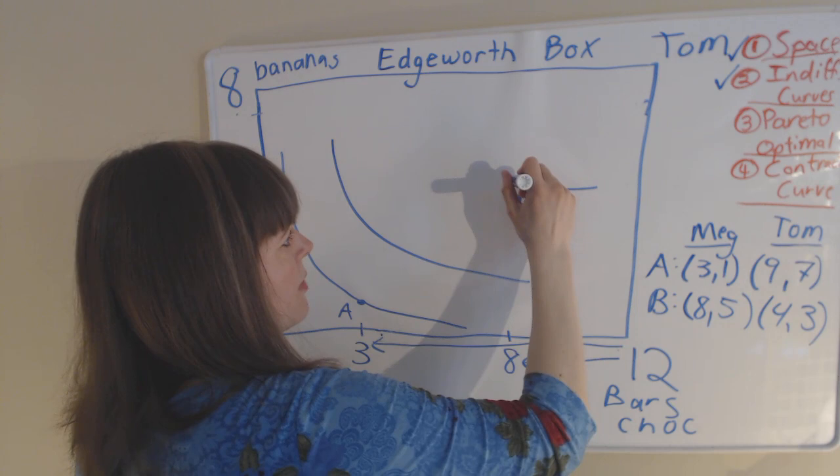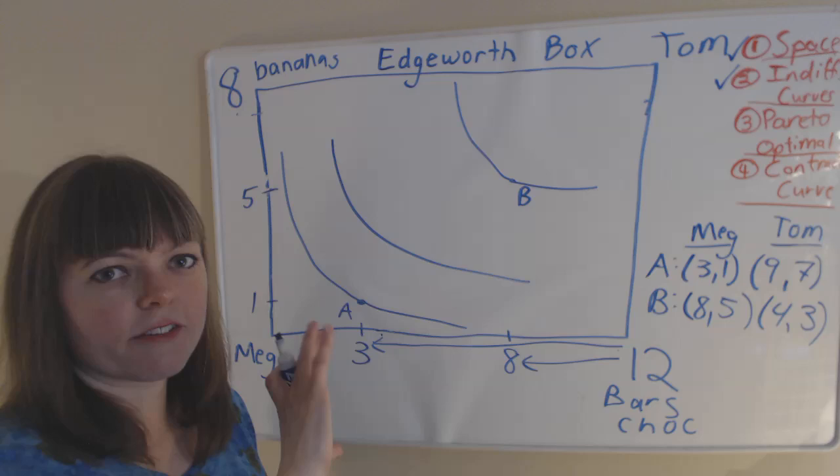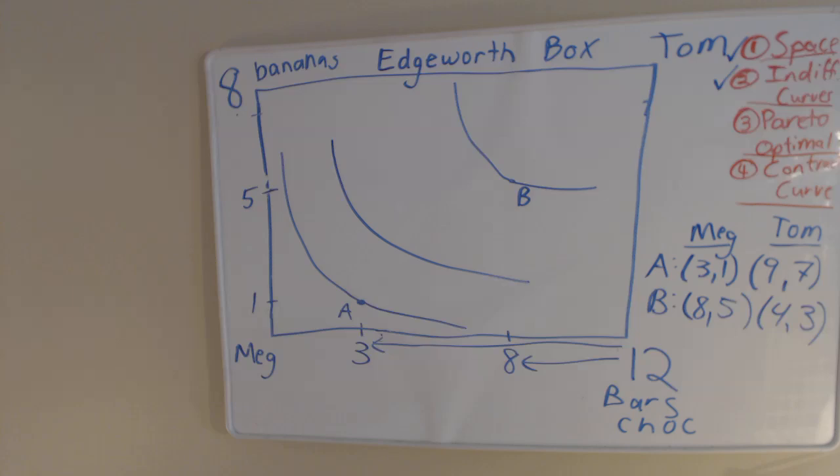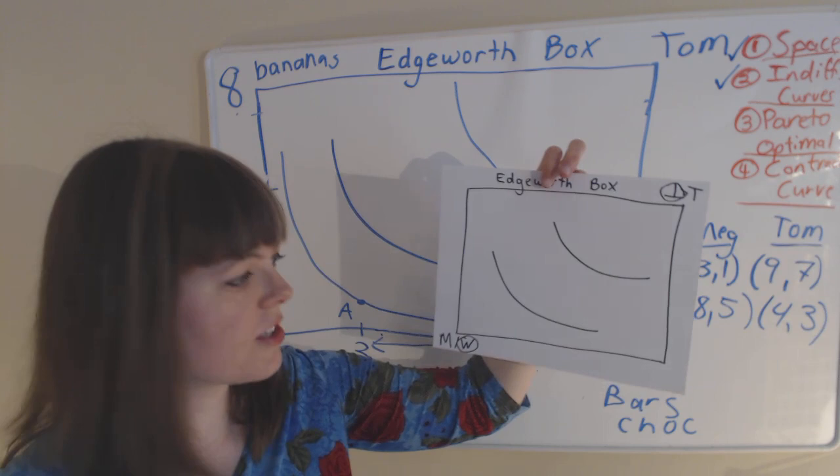For Tom, however, we actually have to flip the diagram upside down to think about what that'll look like for Tom. So I created an Edgeworth box that we can actually flip over since I can't flip the whiteboard over.